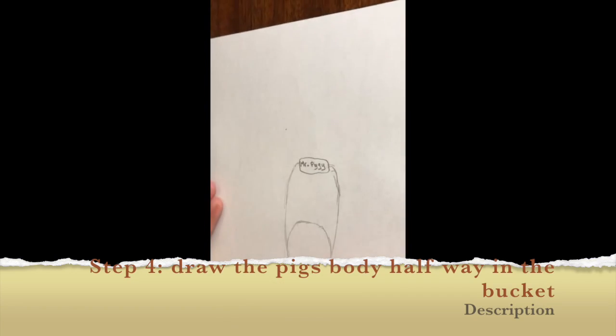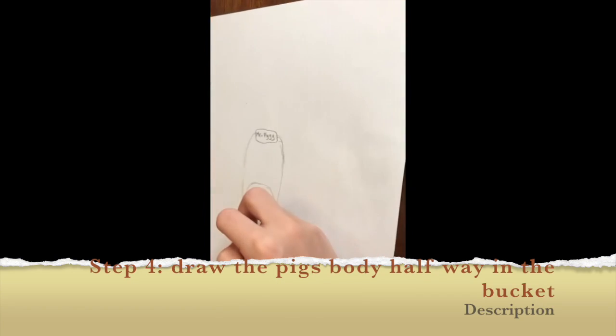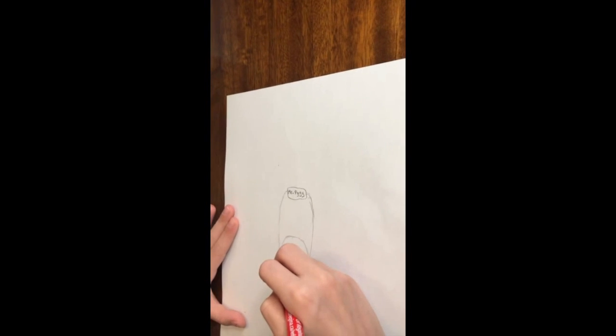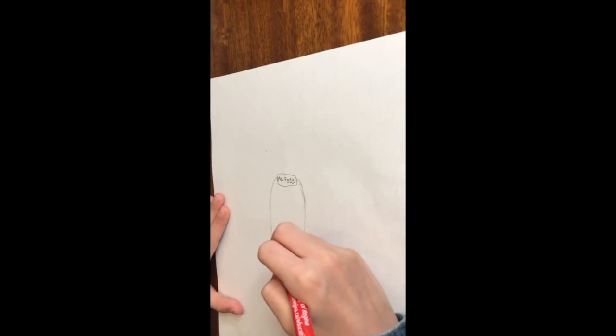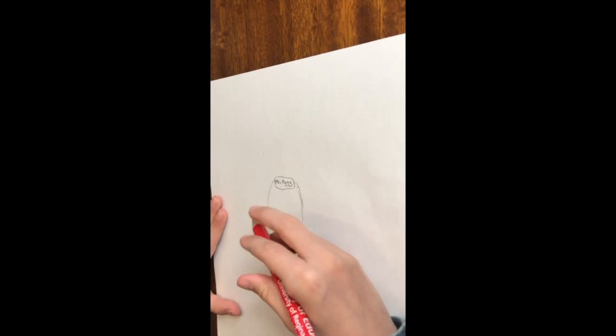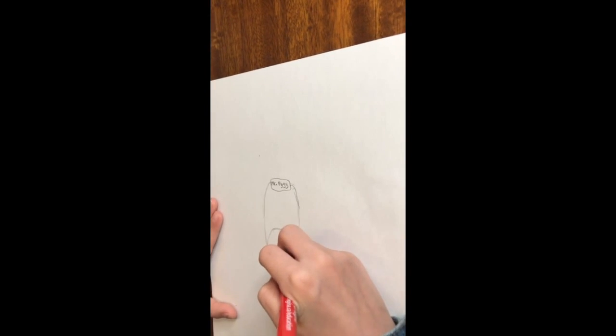Now the next step is you have to draw its body. You just have to make two more lines there. One, two, three. That's step four.